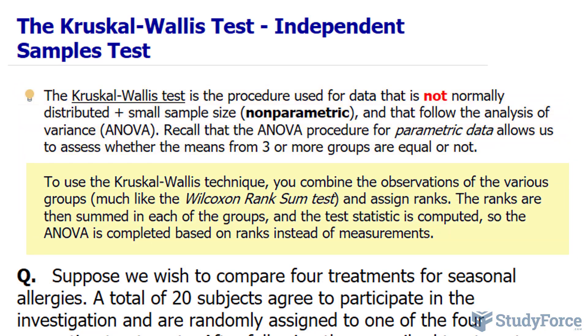To use the Kruskal-Wallis technique, you combine the observations of the various groups, much the same way we did with the Wilcoxon rank sum test, and you assign ranks. The ranks are then summed in each of the groups, and the test statistic is computed so the ANOVA is completed based on ranks instead of measurements.